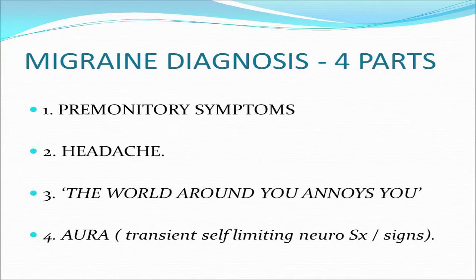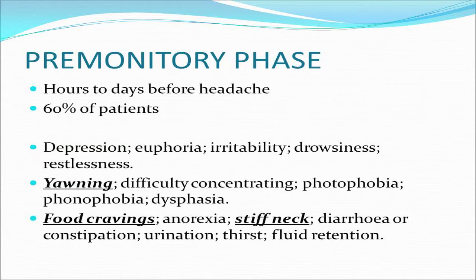In terms of diagnosing migraines, you can split it into four different parts. First is the premonitory phase — symptoms that come before the headache. There's the headache itself. There's the concept of the world around you annoying you — when I mention that to migraine sufferers, they very commonly have an acknowledging smile because they realise I understand what they've been experiencing. And there's also the aura, which is transient, self-limiting neurological symptoms or signs. The premonitory phase can last a couple of days before the headache.